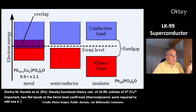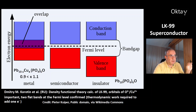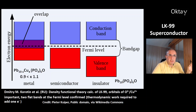This is another work from Dimitri M. Korotin and colleagues. They used density functional theory calculations for LK-99. In this picture, LK-99 is shown as a metal-like compound on the left, while on the right is lead apatite without copper. According to this work, the orbitals of oxide and copper are important, and two flat bands at the Fermi level were confirmed. The Fermi level is the thermodynamic work required to add one electron to the structure.